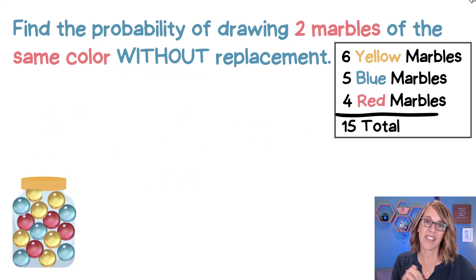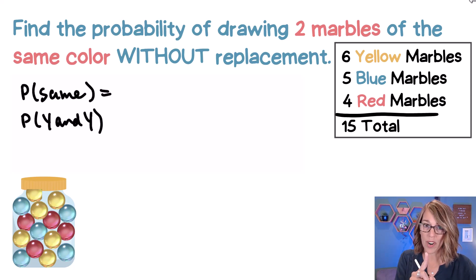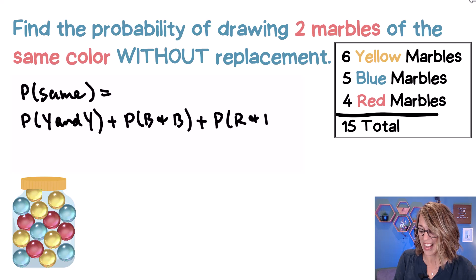So the probability of getting the same color really breaks down to three different cases. So the probability of the same color is equal to the probability of getting a yellow and a yellow, or this is where that plus comes in. So we have another case, the probability of blue and blue, or again, this is where the plus comes in, the probability of red and red.